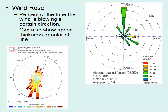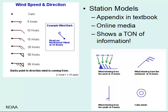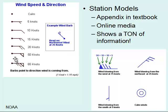Once we gather wind speed, pressure, temperature, and all the information we've learned so far, we construct what are called station models. These station models show you a ton of information. There is some online media to help you discern what's what, and there is also an appendix in your textbook.